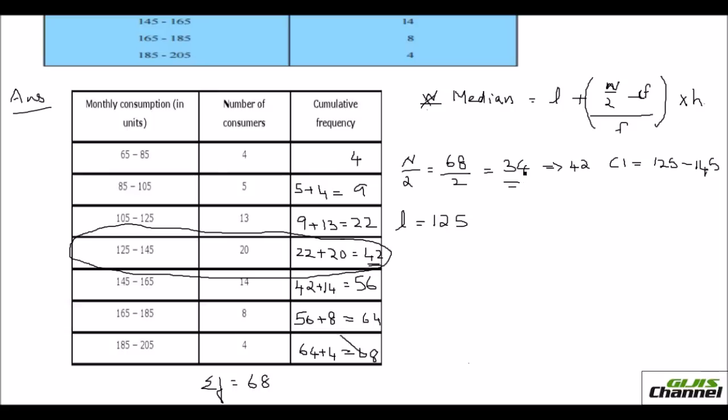Your n by 2 you already got it as 34. And the cumulative frequency is the previous cumulative frequency. I can say instead of writing cumulative frequency you can even write previous cumulative frequency. So here it is 22. So previous cumulative frequency is 22. The cumulative frequency above this marked column. Frequency is 22. And the frequency just frequency is 20. This value 20. And your H, your H is the class size which is also 20.